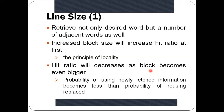Another design issue is line size — what should be the block or cache line size? According to the principle of locality, when a particular desired word is retrieved, not only that word is retrieved but also some adjacent words. So we retrieve not only the desired word but a number of adjacent words as well. The issue is: what should be the line size? Should it be smaller or larger?